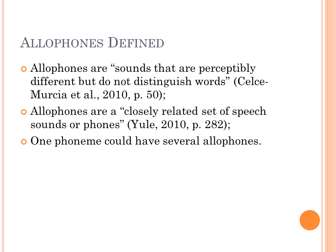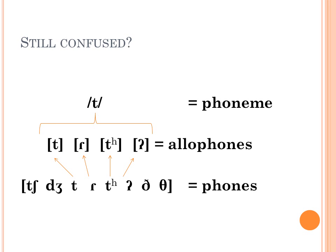Looking at this diagram, starting from the bottom you can see symbols representing all sorts of different sounds that can occur in languages — these are phones. The middle line shows the sounds that can represent the phoneme T. You can use these sounds in place of the phoneme T, so you can say butter as 'butter', 'butter', or 'butter'. All of the sounds in the middle line are allophones of the phoneme T.